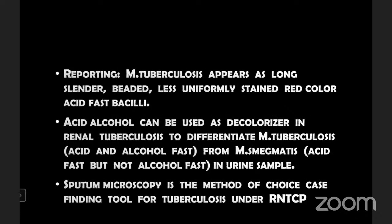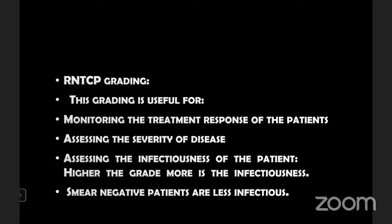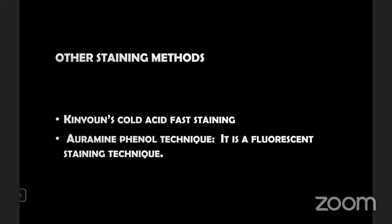Advantages of smear microscopy: it is rapid, easy to perform at peripheral laboratories, and cheaper. Disadvantages: low sensitivity; detection limit is 10,000 bacilli per ml of sputum; viability of bacilli cannot be determined. Mycobacterium tuberculosis appears as long, slender, beaded, less uniformly stained, red-colored acid-fast bacilli. Acid alcohol can be used as decolorizer in renal tuberculosis to differentiate mycobacterium tuberculosis from mycobacterium smegmatis in urine samples. Sputum microscopy is the method of choice under the Revised National TB Control Program (RNTCP).